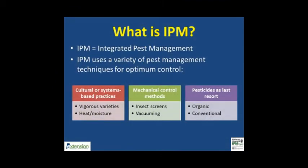Integrated Pest Management incorporates the use of economic thresholds to make pest management decisions, then incorporating various pest management tactics that include cultural practices, mechanical methods, and using pesticides as a last resort. Greenhouse producers must have an IPM plan that emphasizes pest prevention.